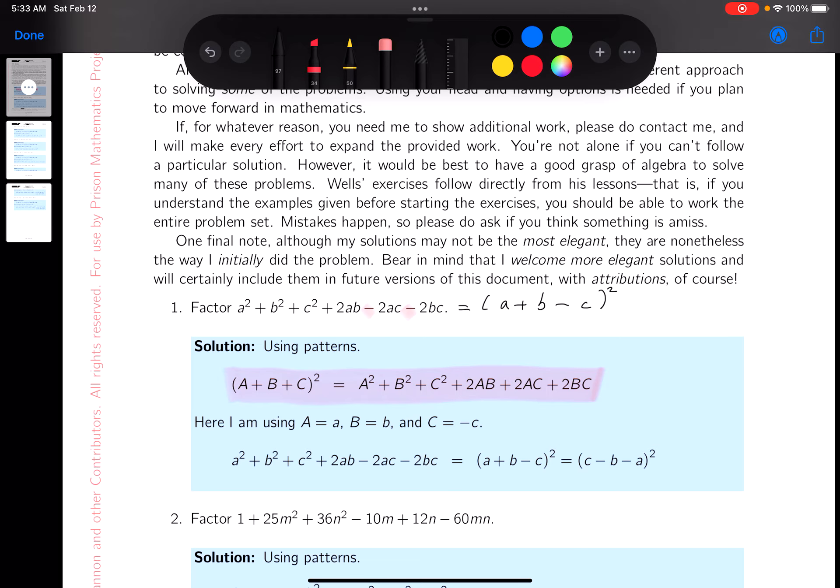So let's write down what you'd get then in that case. You would get A squared plus B squared, and then I have to square the minus C, which would be plus C squared, then plus twice the product of A and B. Let's see, the product of A and minus C, which would be minus AC, and the product of B and minus C, which would be minus BC.